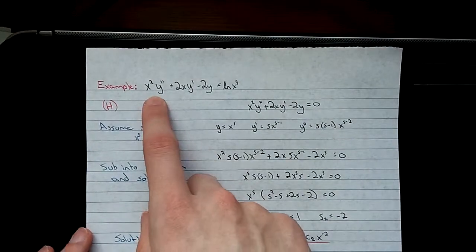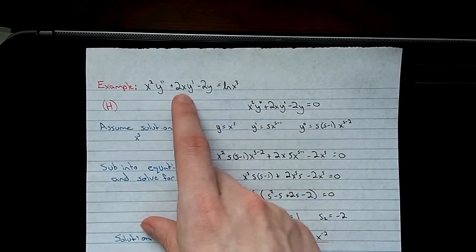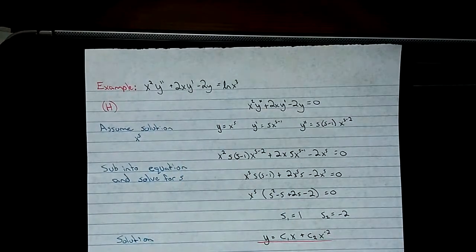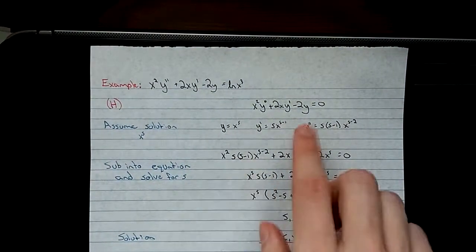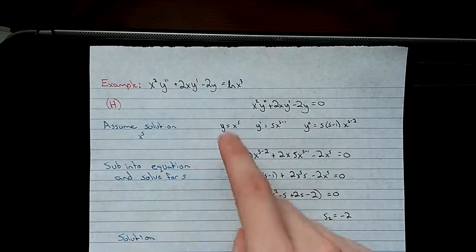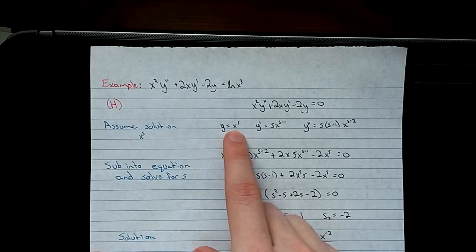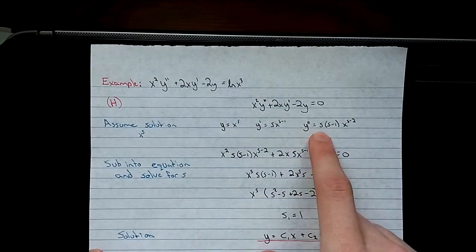We have our equation here: x squared y double prime plus 2xy prime minus 2y equals the natural log of x cubed. So we're going to do our homogeneous solution here. We've assumed that the solution has the form x to the power of s.